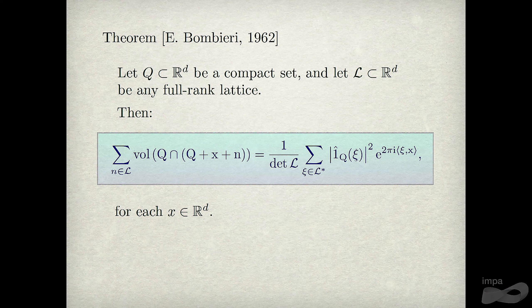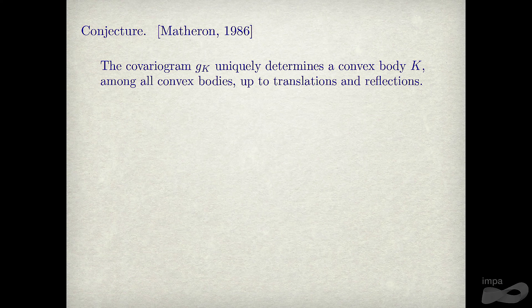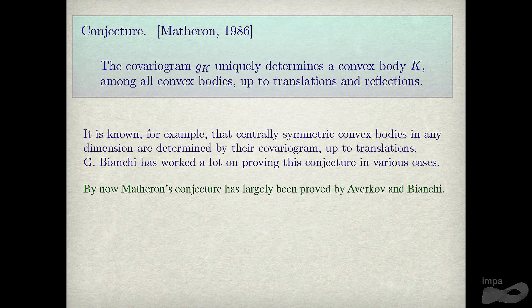Bombieri used this to approach the Minkowski conjecture on products of linear forms over the reals. We want to use it for something else: the Materon conjecture on whether the covariogram uniquely determines the body. That conjecture is largely proved now by Averkov and Bianchi, though some cases remain open — there are counterexamples for non-convex bodies, while for convex bodies it's largely true.